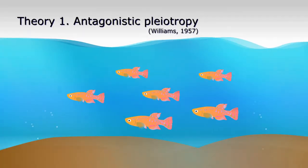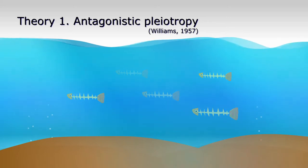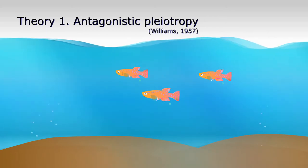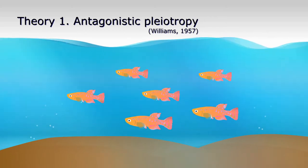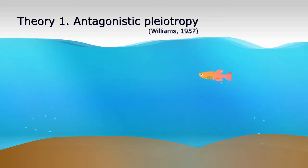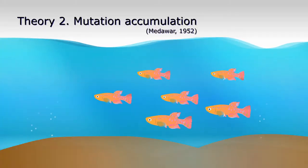Two hypotheses try to address this apparent paradox. Hypothesis one stresses the importance of natural selection: a mutant gene that allows faster maturation and better breeding will be favored by selection and eventually becomes highly frequent in the population, even if it makes the organism sick at some point in life and reduces its lifespan.